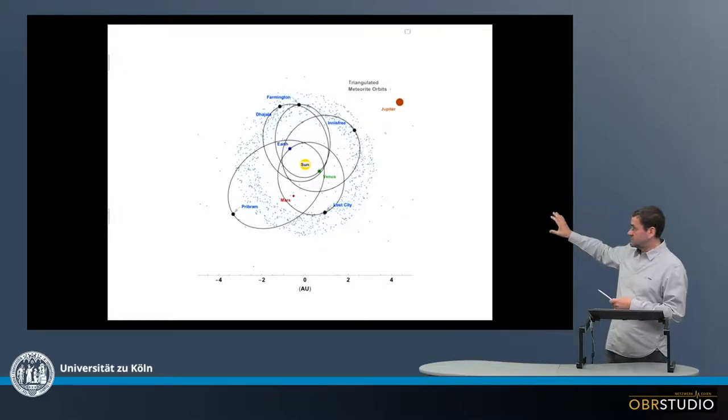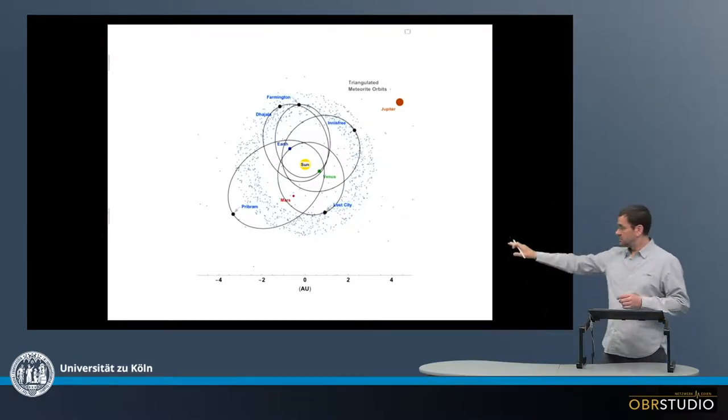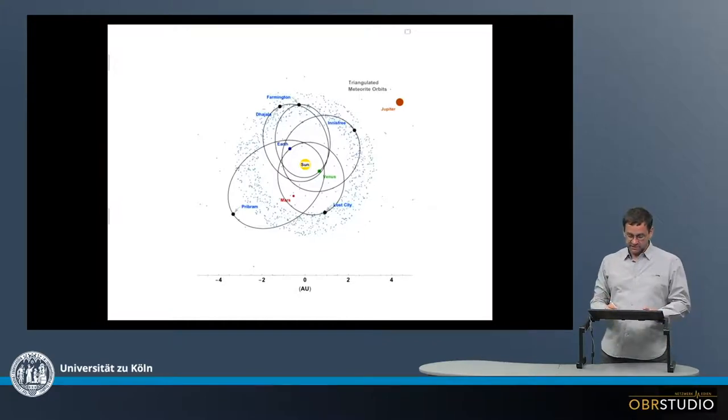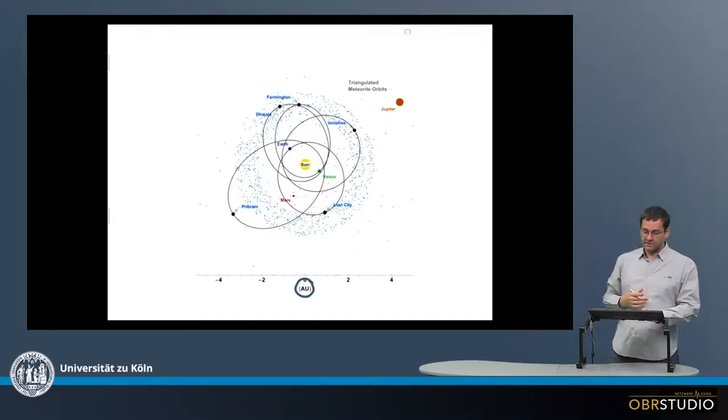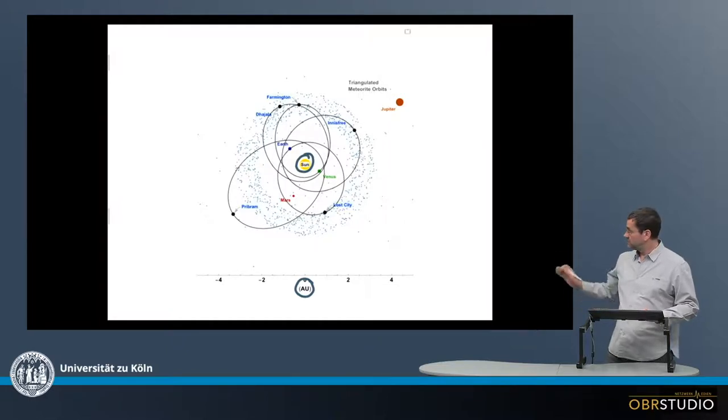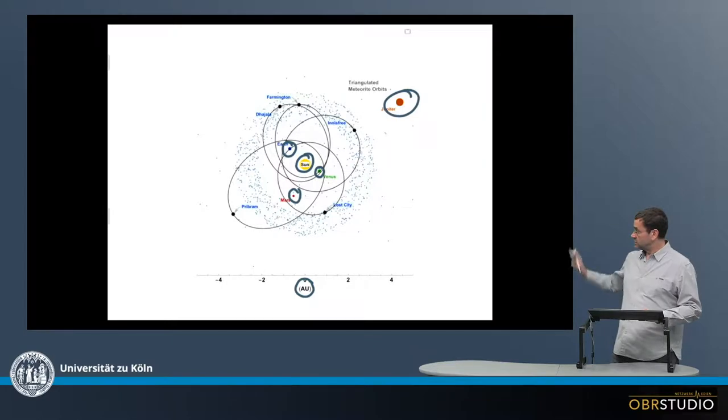And this is what is shown here on this plot. On the x-axis is the distance from the Sun in astronomical units. So we look down on our solar system. In the center here is the Sun, and then the planets from in to outwards: without Mercury, there's Venus, then there's Earth, then there's Mars, and here is Jupiter.